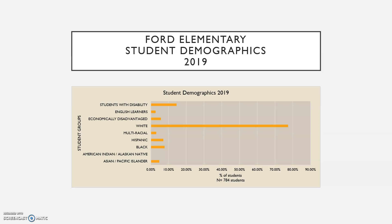Ford Elementary student demographics in 2019: we have a very high percentage of white students in our school. Students with disabilities, English language learners, and economically disadvantaged students are very low. Multi-racial, Hispanic, African American, and Asian Pacific Islanders are also pretty low on the demographic scale. There are about 784 students enrolled at Ford Elementary.